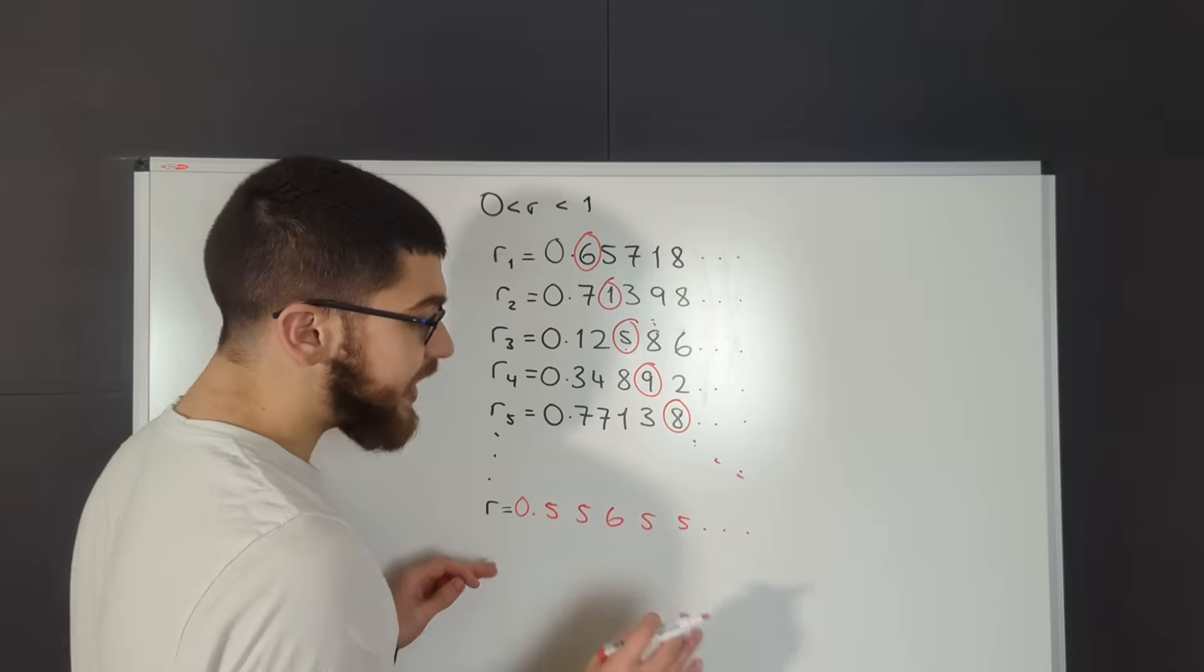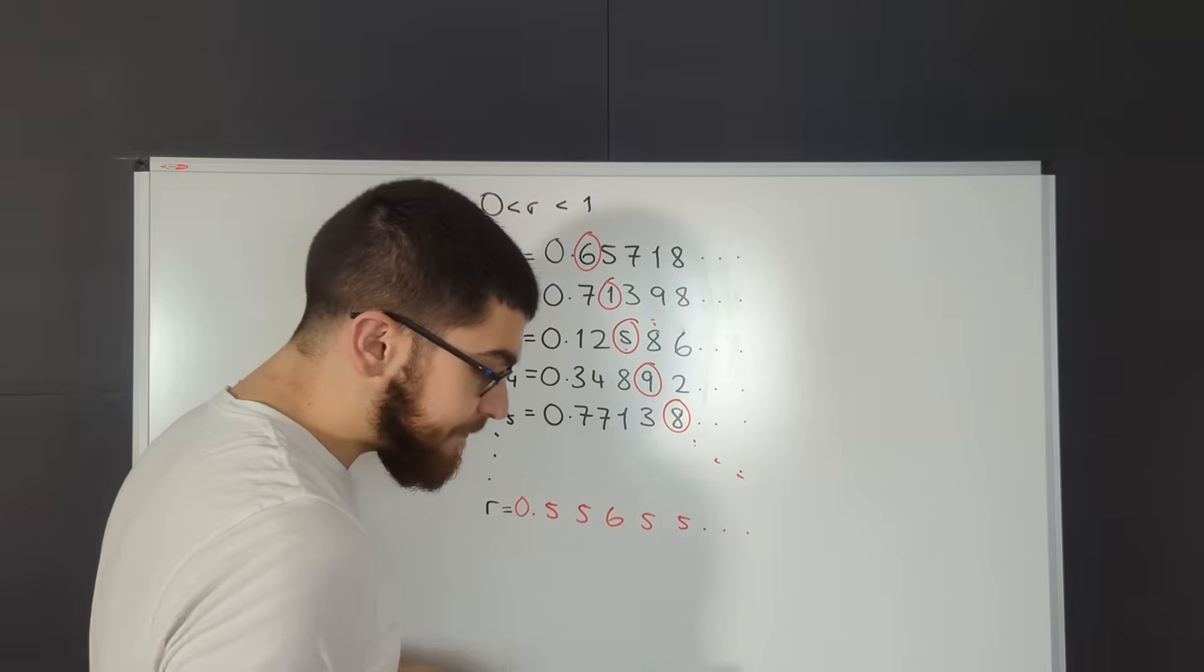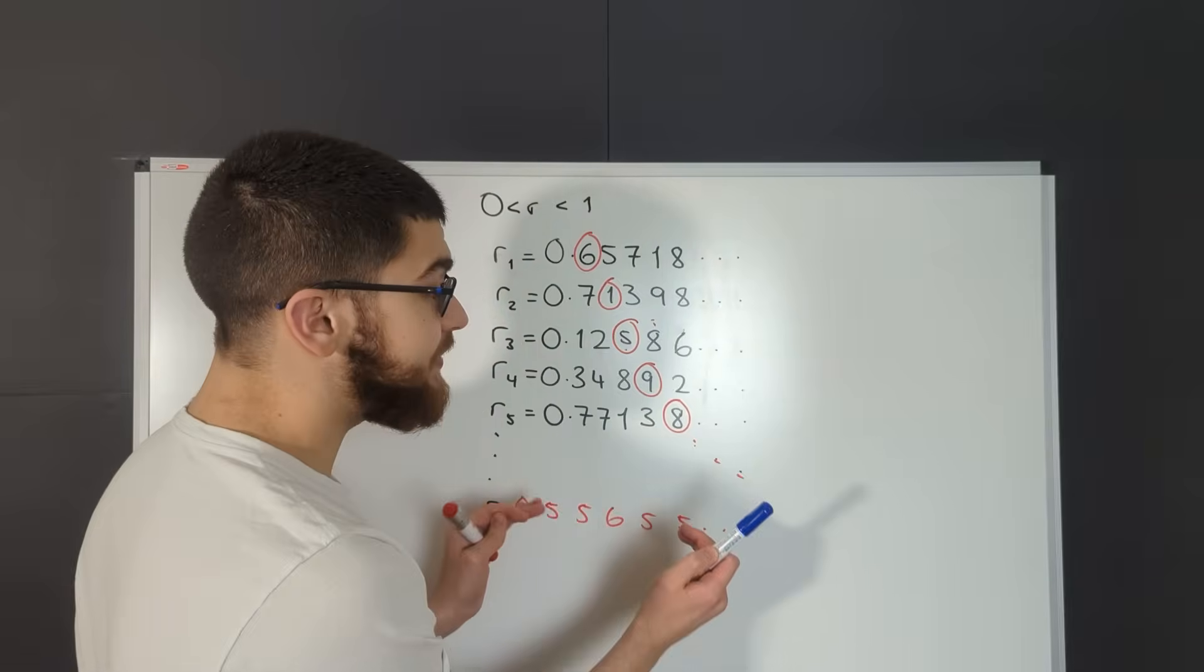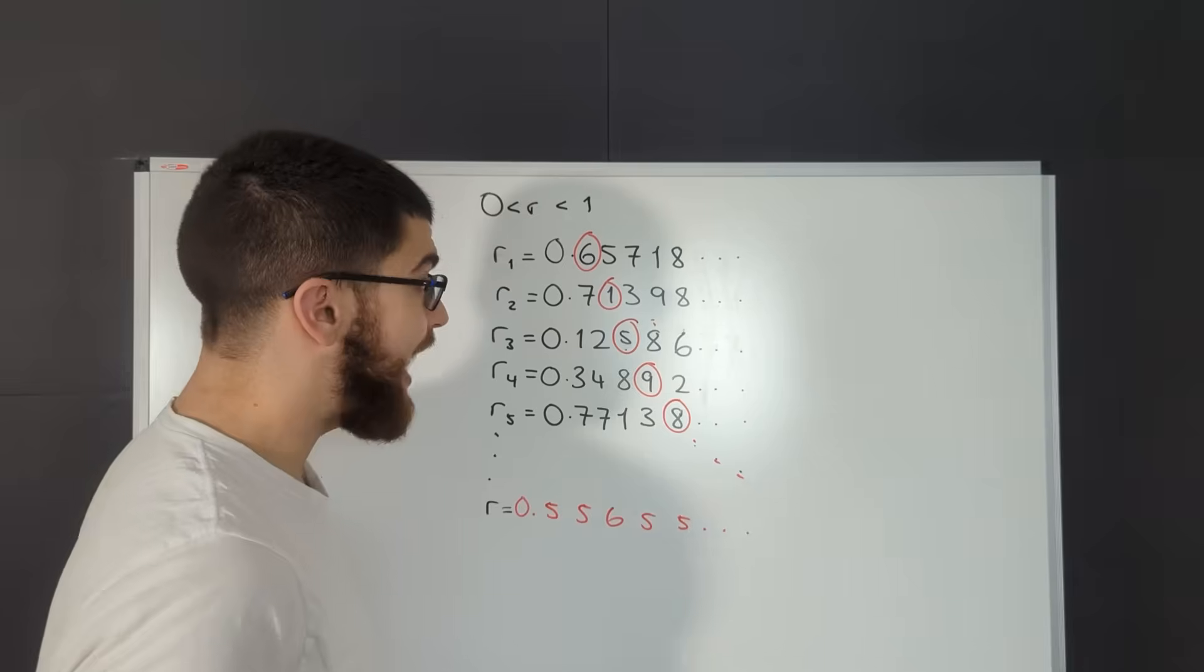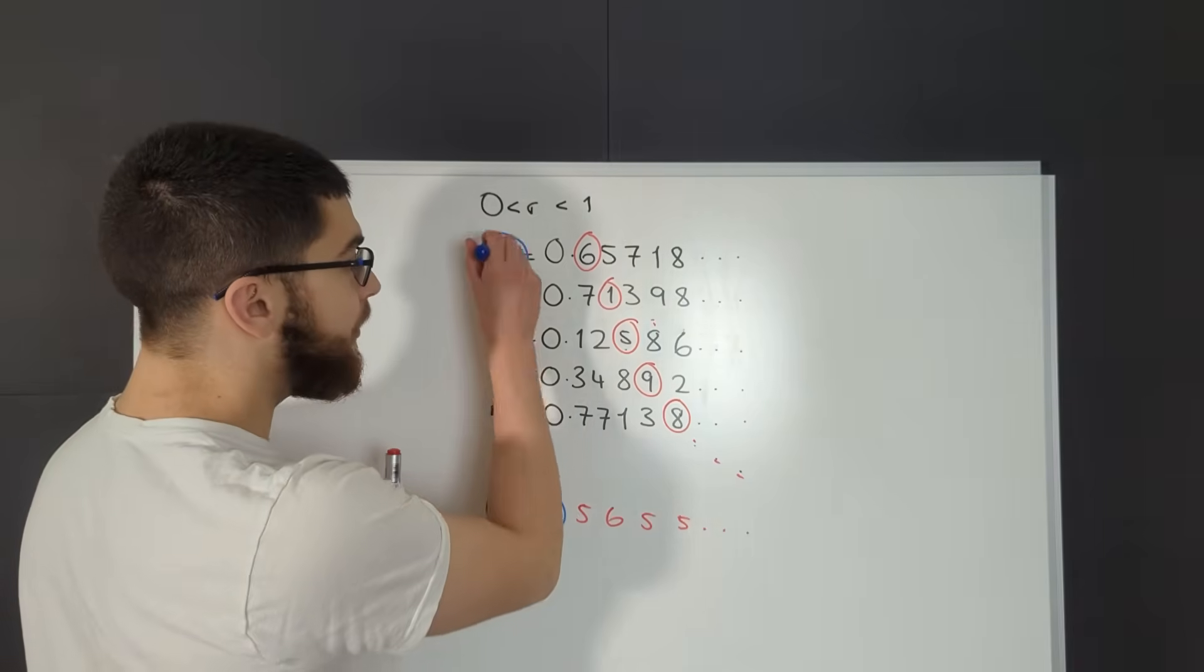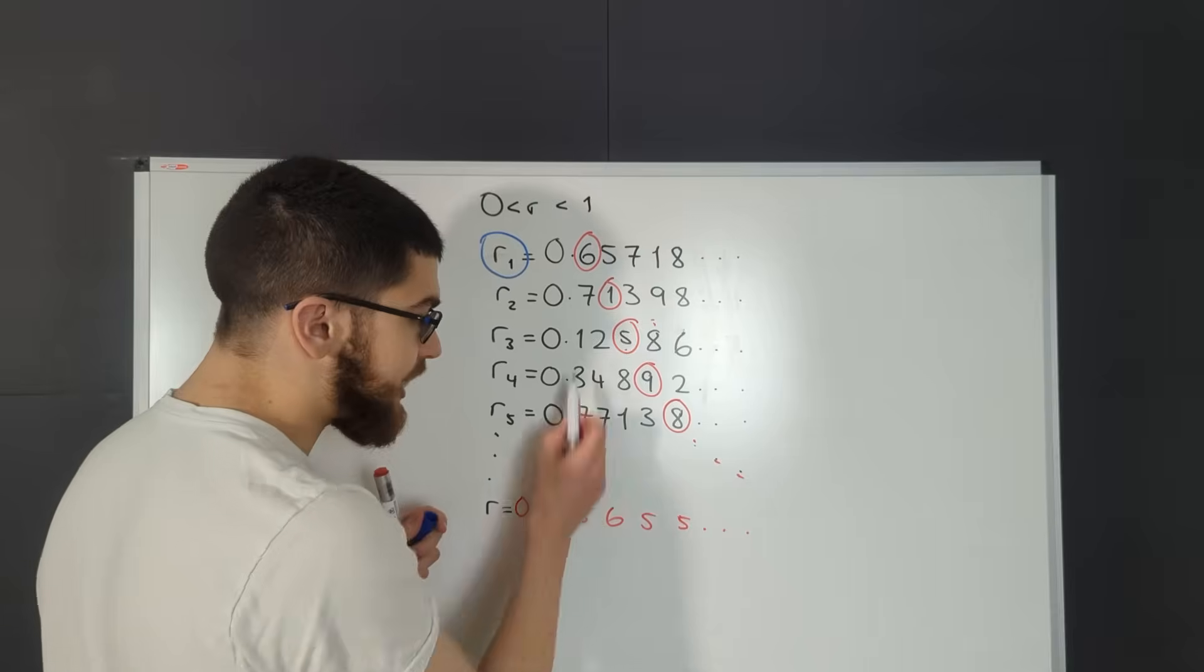It's between zero and one, and it is different from every other number, even if this list is infinitely long. And how I know that is because it's going to be different to R1 because it's different in the first digit.